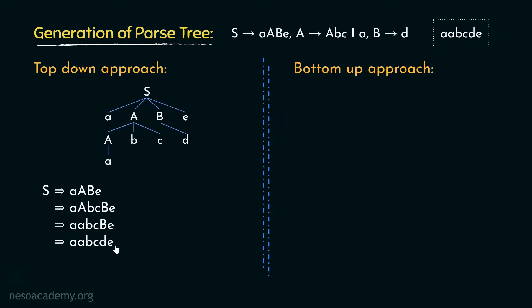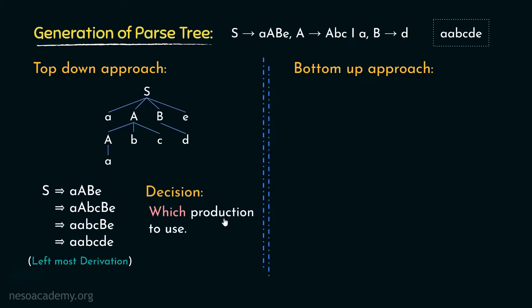Observe the derivation carefully: at every point, we kept on expanding the leftmost non-terminal. So this is leftmost derivation. In the top-down approach, we use leftmost derivation. During this derivation, the only decision we make is which production to use. For example, from A, we could have derived just a, but then we couldn't derive bc — that is why we chose the production A → Abc. So in top-down approach, we decide which production to use at each step. This is all about the top-down approach, which is followed by top-down parsers.